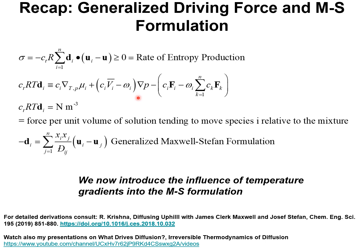The pressure gradients are effective in separations only if there is a difference between the volume fraction and the mass fraction, as is the case in the separation of uranium isotopes with ultracentrifugation. Then we have the influence of the body forces, which could be electrostatic potential gradients. A simple physical explanation of the term CT·R·T·DI, which has units of newtons per cubic meter, is that it is a force acting per unit volume of solution tending to move species i relative to the mixture.